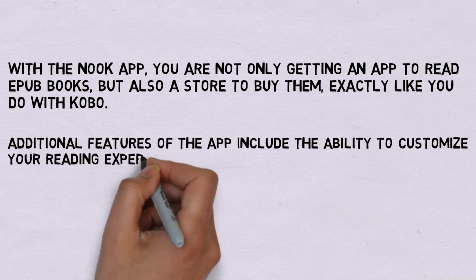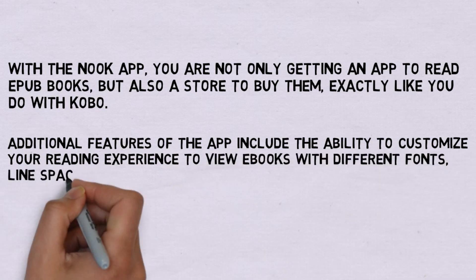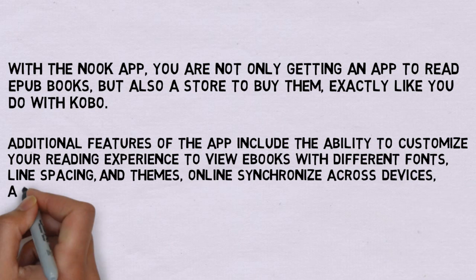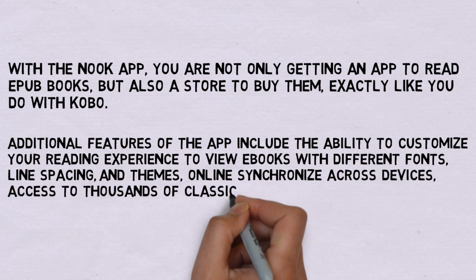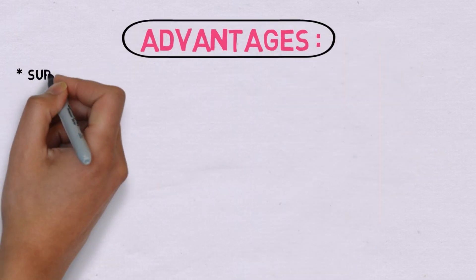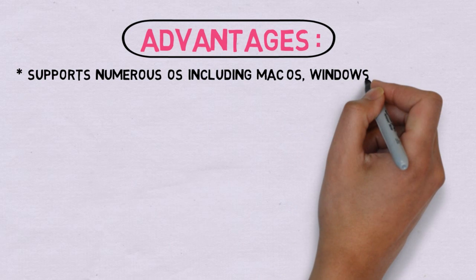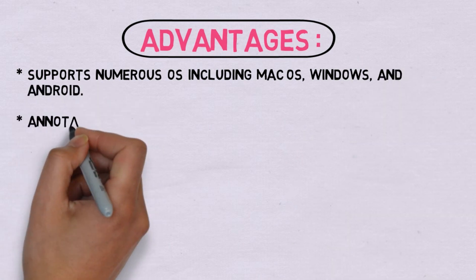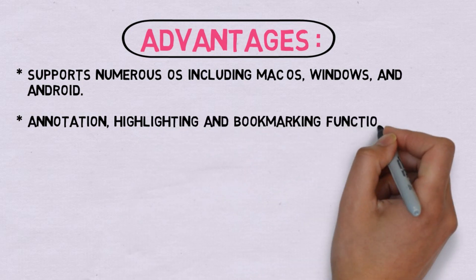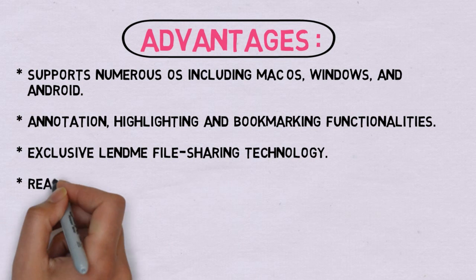Additional features of the Nook app include the ability to customize your reading experience to view ebooks with different fonts, line spacing, and themes, online synchronization across devices, access to thousands of classics, and more. Advantages: Supports numerous OS including macOS, Windows, and Android. Annotation, highlighting and bookmarking functionalities. Exclusive LendMe file sharing technology. Reads Adobe DRM files.